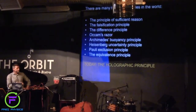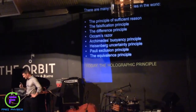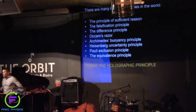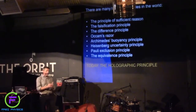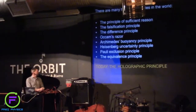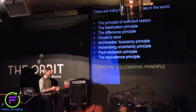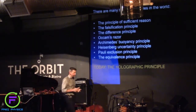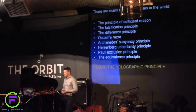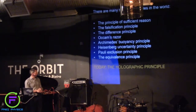The falsification principle is an important principle in science — a good theory should be falsifiable. There's the difference principle: the statement that it's okay to make the gap between the rich and the poor larger as long as the poor get better along the way. Then there's Occam's razor, which states that if you have many explanations of the same thing, the simplest and most beautiful explanation is always the right one.